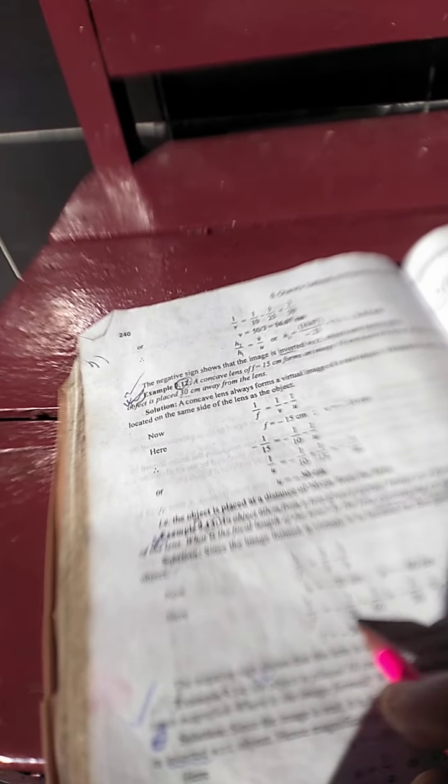Then what's the focal length? 1/f = 1/v - 1/u. Instead of v, put 1/(-20), and instead of u, 1/(-60). The minus minus will be plus. Then take the LCM.